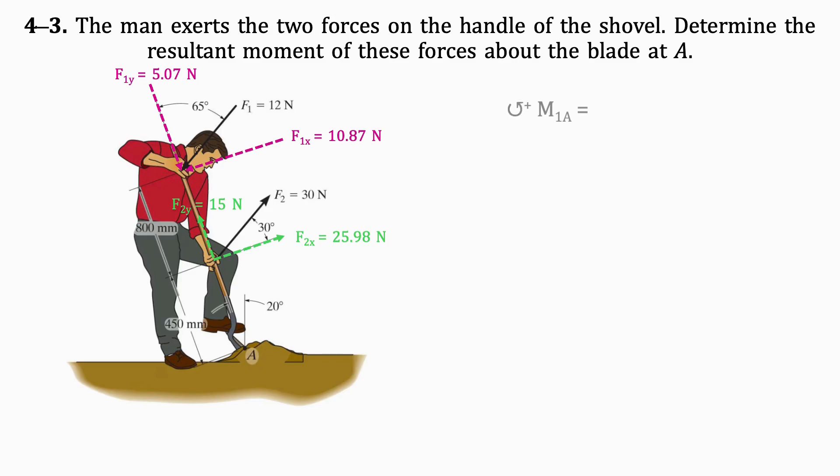Let's find the moment of F1 about A first. To get the moment of F1 about A, we multiply the X component of the force F1 by its distance from A, which is 1.25 metres. The result is 13.59 newton metres in the counterclockwise direction.